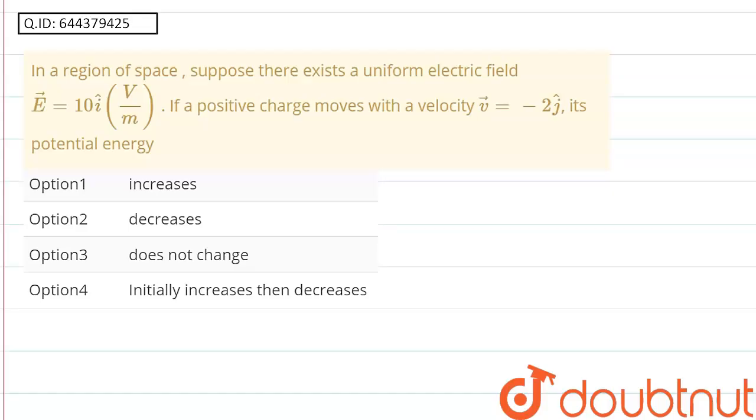Hello friends, the problem is: in a region of space, suppose there exists a uniform electric field E that is 10 i-cap volt per meter. If a positive charge moves with the velocity v that is minus 2 j-cap, its potential energy... These are the four options and we have to tell whether the potential energy increases, decreases, or does not change.